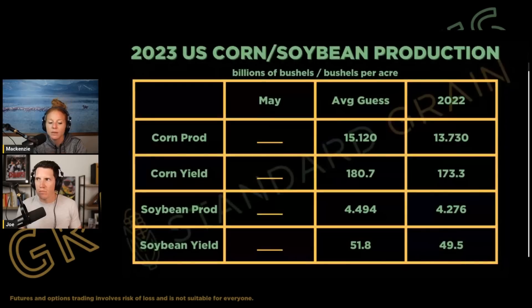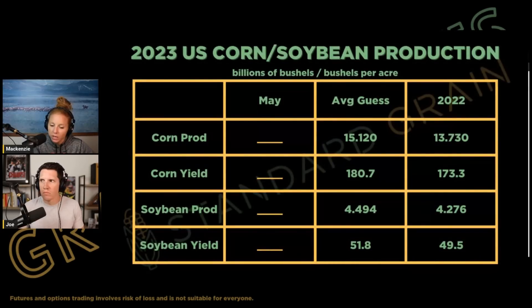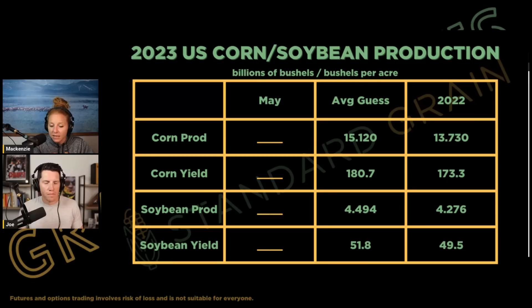We've got a USDA report tomorrow. USDA will release its monthly crop production and WASDE report on Friday morning. The report will include our first look at the new crop balance sheets for corn, soybeans, and wheat. USDA should start with trend yield numbers for corn and soybeans. There may also be adjustments to the demand side of the U.S. balance sheets. Many traders expect reduced old crop corn demand in particular.